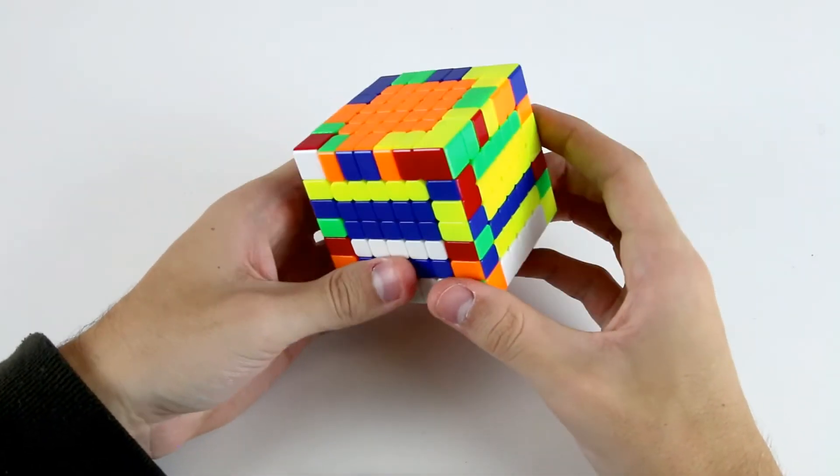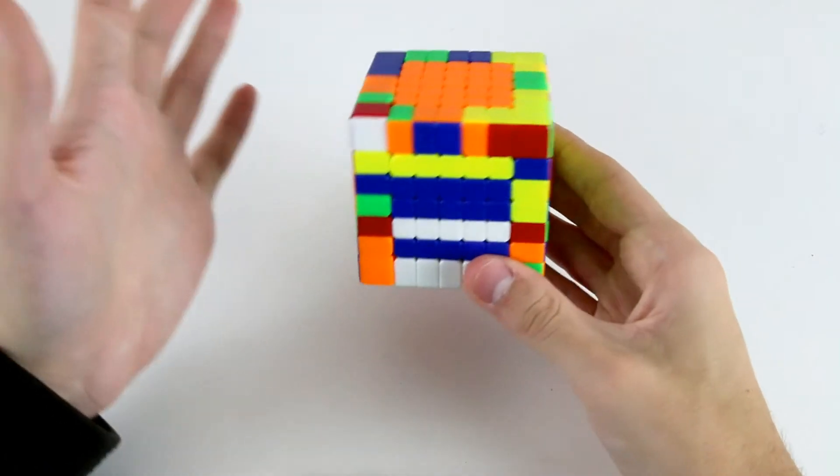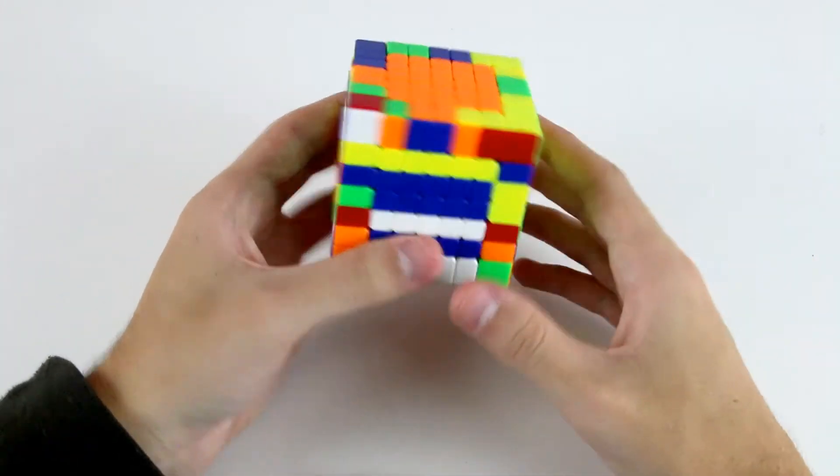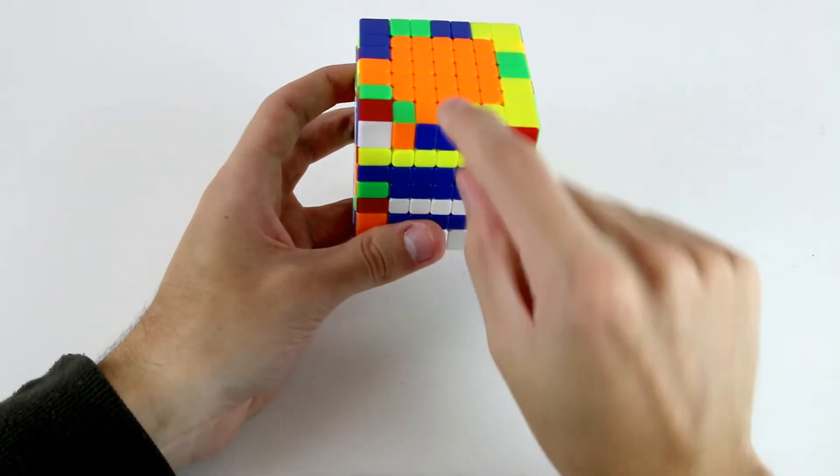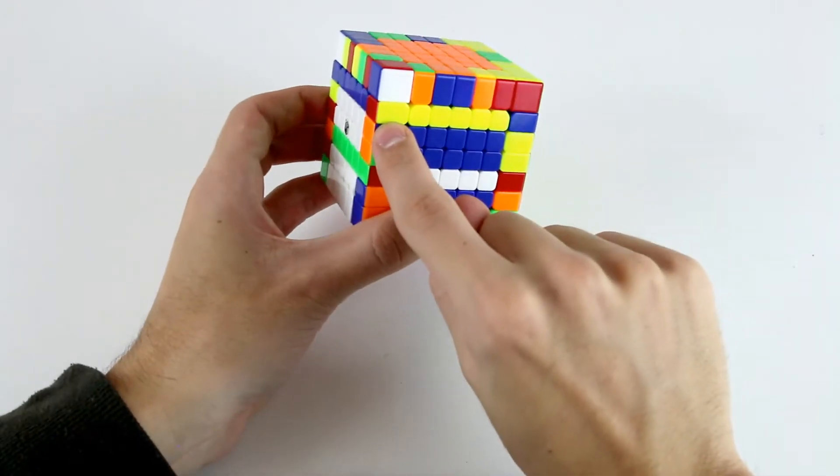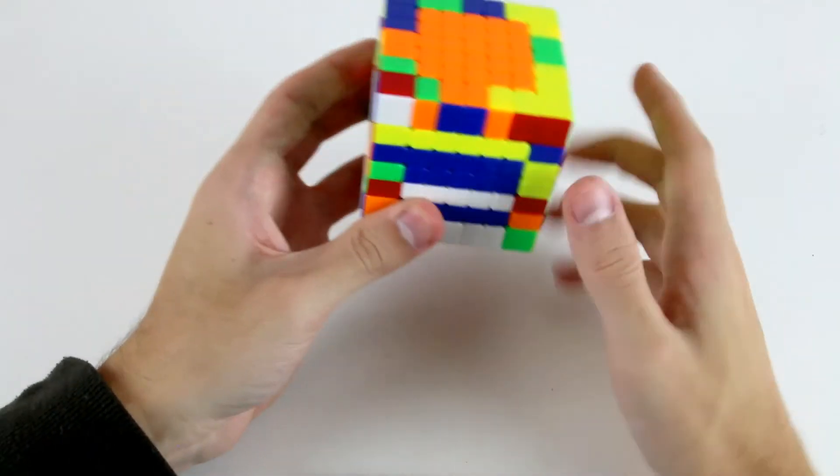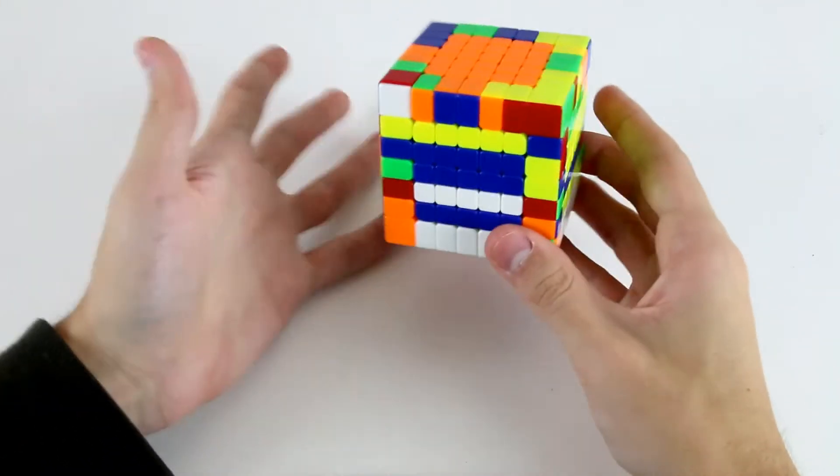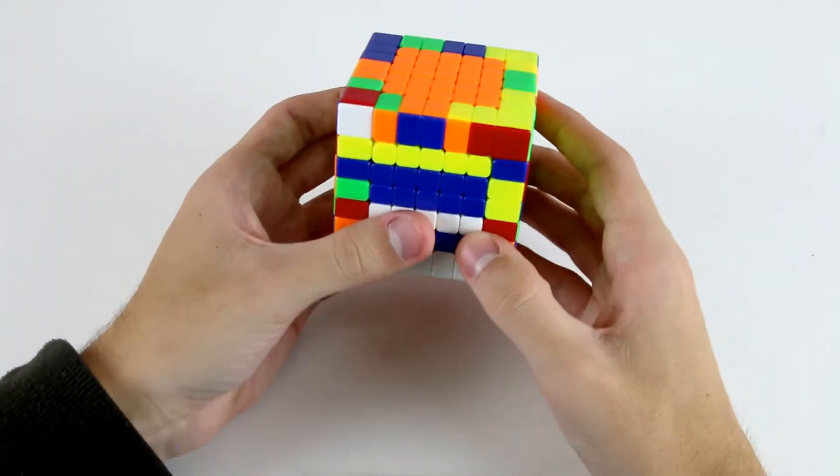Another really important thing that's going to help you look ahead is being able to pair up edge pieces without looking at what you're doing. For example, we've got these blue and oranges, this blue and orange, this blue and orange and this one.